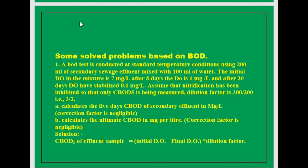Let us consider some more problems. A BOD test is conducted at standard temperature conditions using 200 ml of secondary wastewater effluent mixed with 100 ml of water. The initial DO of the mixture is 7 mg/L. After 5 days the DO is 1 mg/L, and after 20 days the DO has stabilized at 0.1 mg/L. Assume that nitrification has been inhibited so that only CBOD5 is being measured. The dilution factor is 300 divided by 200, that is 3/2. Part one: calculate the 5-day CBOD of the secondary effluent in mg/L (correction factor is negligible). Part two: calculate the ultimate CBOD in mg/L (correction factor is negligible).